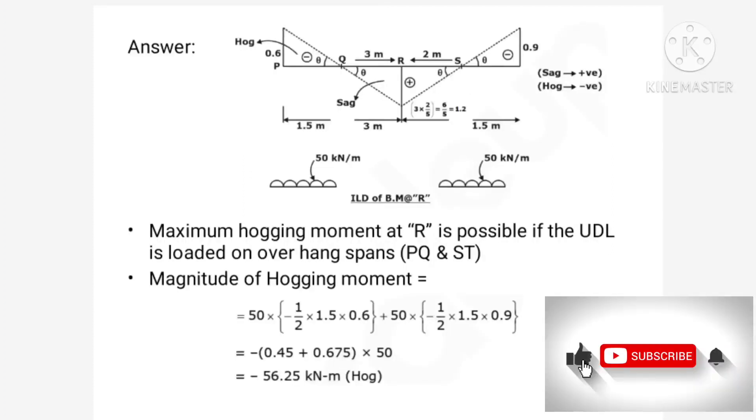So the logic is that if the load, let us say it is a train passing over a bridge, if it is completely occupying Q and S, then whole part will be subjected to sagging bending moment. So for this part, that is for R, bending moment will be positive. But some part is on P to Q and some part is on S to T. So then that is the case when R will be developing negative bending moment. So this is the position of loads - UDL is completely on PQ patch as well as ST patch and there is nothing on Q to S.